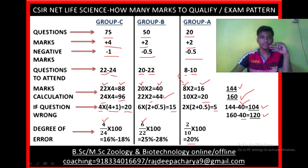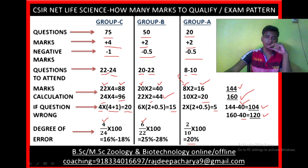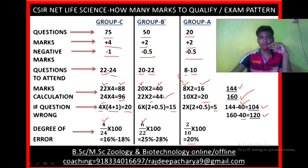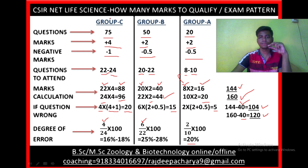I hope you are getting help from this lecture about how many questions to attempt: minimum 22 to maximum 24 from Group C, 20 to 22 from Group B, and 8 to 10 from Group A, to qualify CSIR Net Life Science.